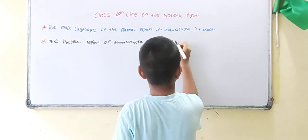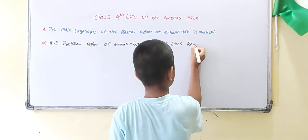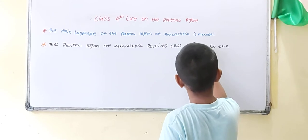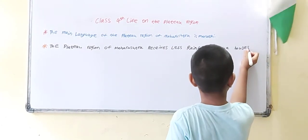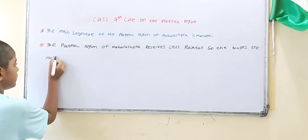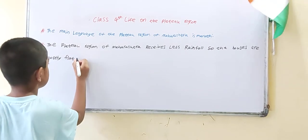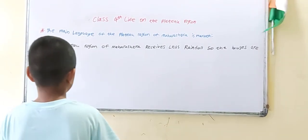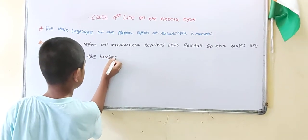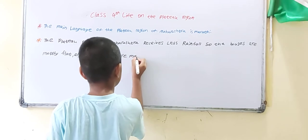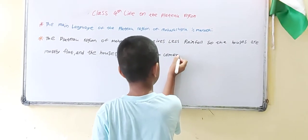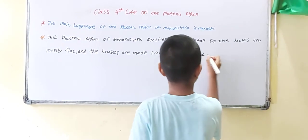This rainfall, soda houses are mostly Brad. And the houses are made from cement or mud or stone.